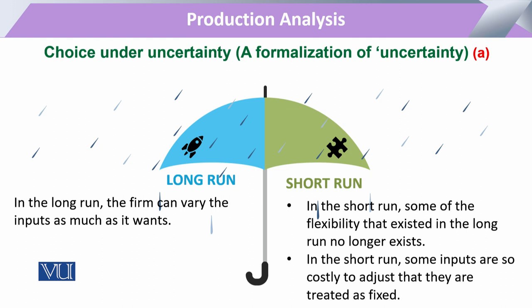Ab adjusted ka jab hum word use karte hain, it means the entrepreneur or the firm owner has a larger picture in his mind, and that larger picture is showing the long run production process. Long run production process ke liye entrepreneur ke paas tamam resources ko shift ya change karne ki availability hai — woh chaahe to 10 saal baad usi zameen ke tukde pe koi industry laga de. Long run decisions are broader in aspect, and short run decisions have to be adjusted keeping in view the long run objectives. These short run and long run decisions may go side by side to cover the total aspect of the project.